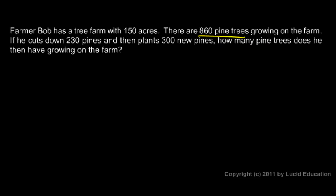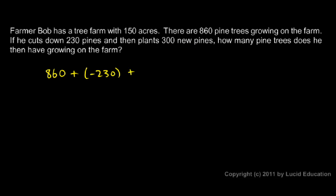So we need the 860 pines that he started with. Then he cuts down 230, so this would be like a negative 230 — removing trees corresponds to a negative number. And then planting new pines, adding trees, corresponds to a positive number. So it's 860 plus negative 230 plus 300.